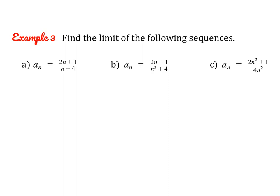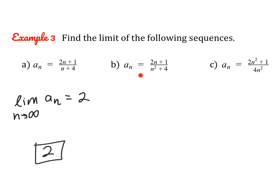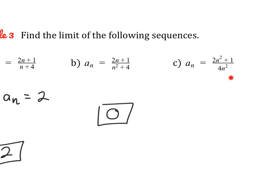Let's give these a try. The main point is that you evaluate the limit of a sequence the same way you evaluate the limit of a function as x approaches positive infinity. For the first one, the degrees are the same so it's just the ratio of the coefficients: the limit is 2. For the next problem, the degree on the bottom is larger, so the limit is 0. And for the last problem, the degrees are the same, so it's the ratio of the coefficients: 1 over 2.